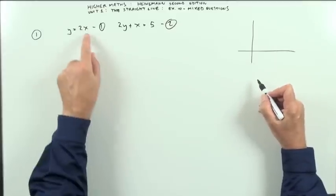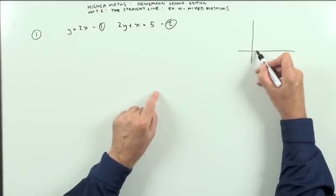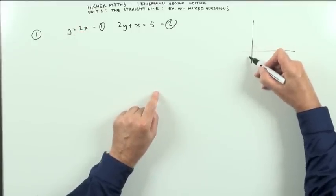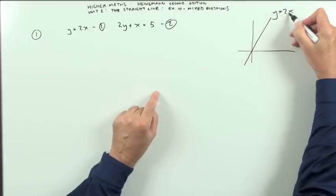You've got the line y equals 2x. That means it goes through the origin with gradient 2, and gradient 2 means if it goes along 1 it goes up 2. So it climbs 2 for every step along. So that approximately would be y equals 2x.